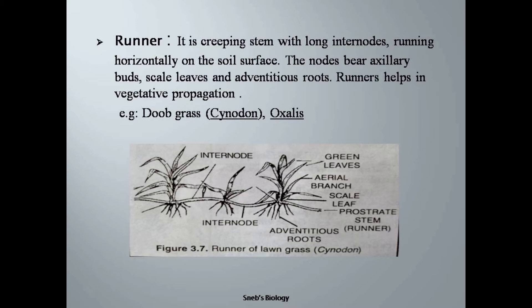Whenever the nodes come in contact with proper soil, it gives rise to a small stem in which some part is above the ground and some part is below the ground. That stem also gives rise to a branch with nodes and internodes, and the nodes come in contact with soil and again give rise to another stem. So it appears as if the plant is taking steps and moving in a direction — that's why this modification is called runners.